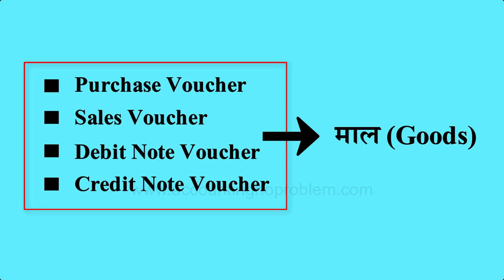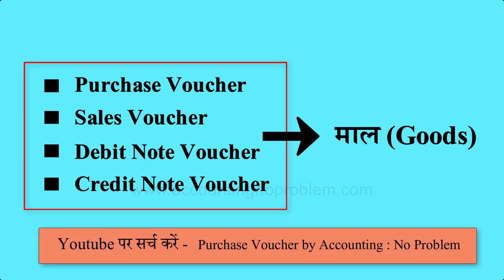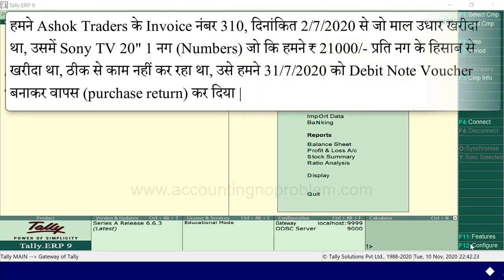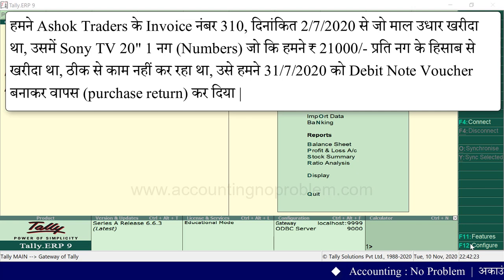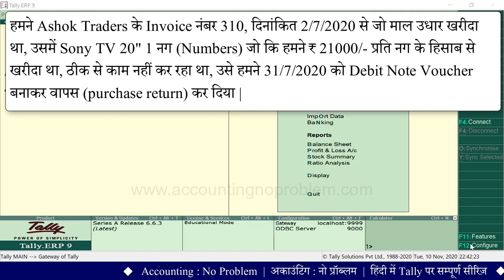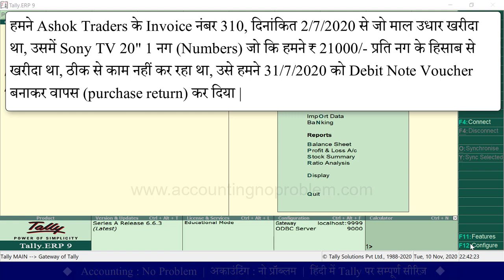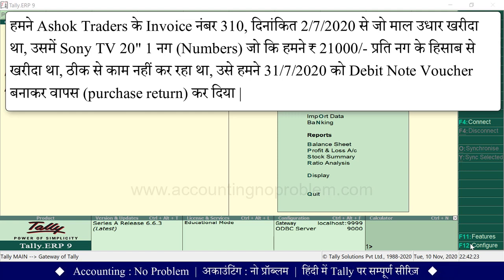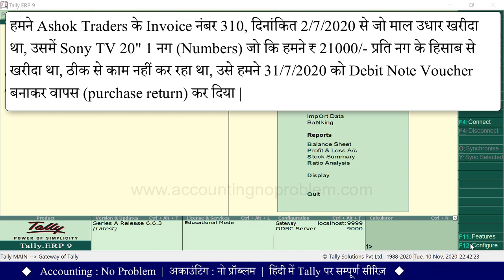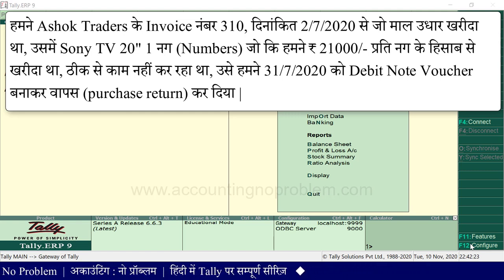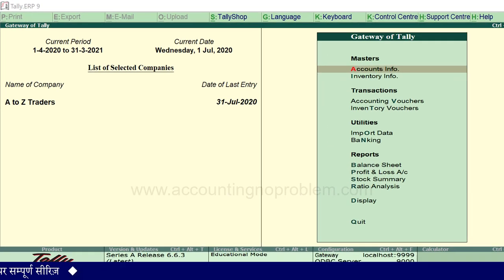उन सभी बातों को अच्छे से समझने के लिए purchase voucher वाली वीडियो अवश्य देखें। आईए अब purchase return का एक transaction देखते हैं। हमने अशुक ट्रेडर्स के invoice number 310, दिनांकित 2 जुलाई 2020 से जो माल उधार खरीदा था — उसमें Sony TV 20 inches, एक नग, जो 21,000 रुपये प्रति नग के हिसाब से खरीदा था — ठीक से काम नहीं कर रहा था। उसे हमने 31 जुलाई 2020 को debit note voucher बनाकर वापस कर दिया, यानी purchase return कर दिया।